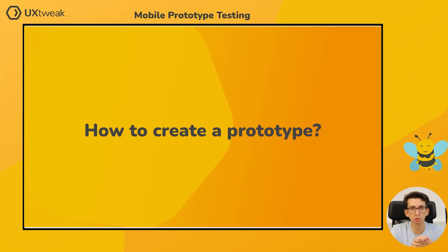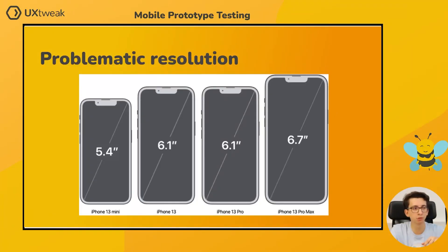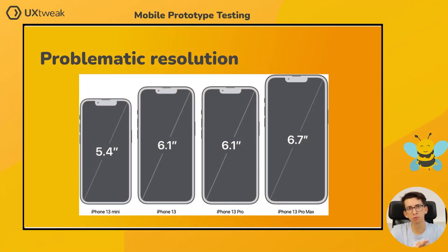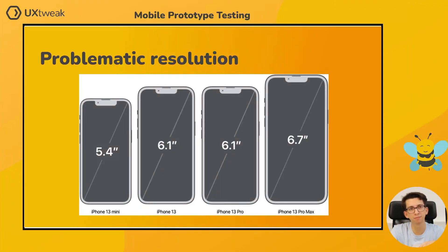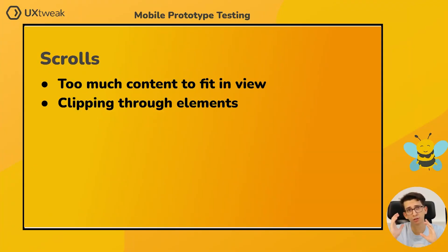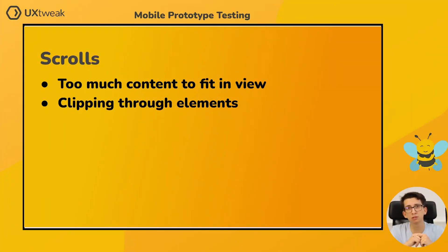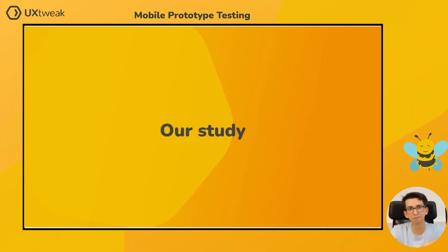So, how to create a prototype for mobile testing? First of all, since there are many mobiles with many different resolutions, it's a good idea to pick one resolution, create your prototype for that resolution, and test it on mobile phones with the same resolution. Once you are done with that, your responsiveness should take care of the rest. Also, since you are trying to fit content on a much smaller screen, you are more than likely to use scrolls — it is important that you model these scrolls properly in your prototype and make sure they are not clipping through any other elements.